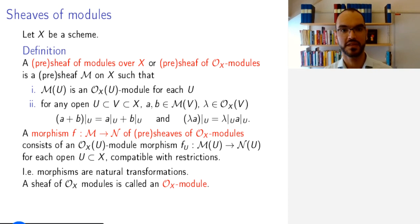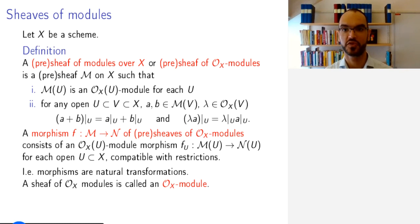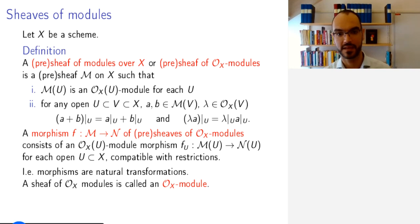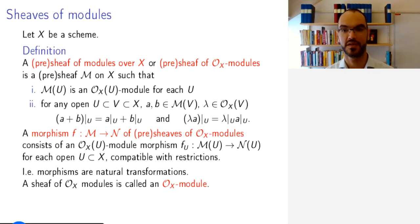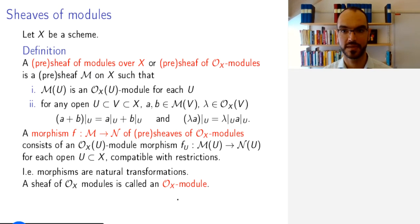What we have defined is a pre-sheave of modules; if you remove the word 'pre' everywhere, that's the definition of a sheave of modules over X. The sheave of OX modules is also called an OX module, just dropping the word 'sheave'. You should think about it as a module jointly over the whole sheave of rings OX.